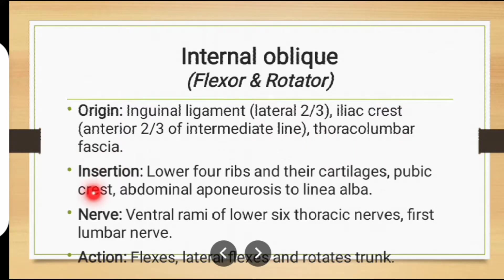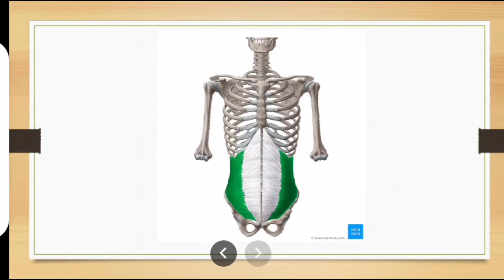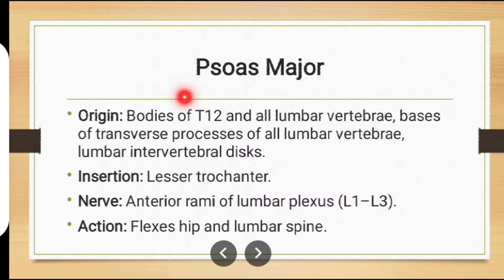Insertion: lower four ribs and their cartilage, pubic crest, abdominal aponeurosis to linea alba. Nerve supply: ventral rami of lower six thoracic nerves and first lumbar nerve. Action: flexion, lateral flexion, and trunk rotation.